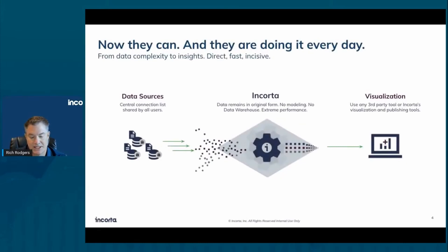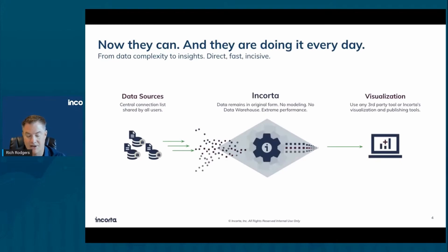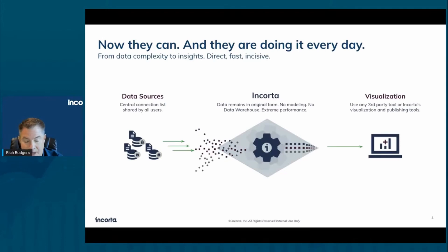But there's a better way. What Encorta does is go directly at the data sources. It brings in all the detail of the data without transforming it, compresses it, creates what we call a mapping of the data, and then stores it in Parquet files and puts it in memory — all at very fast speeds. This eliminates the need for ETLing, aggregating, and putting data into a data warehouse.